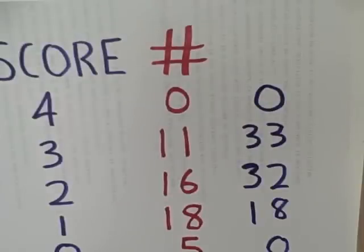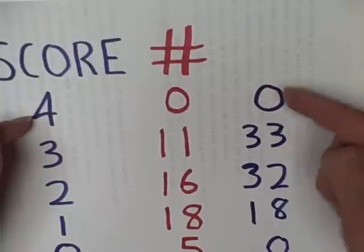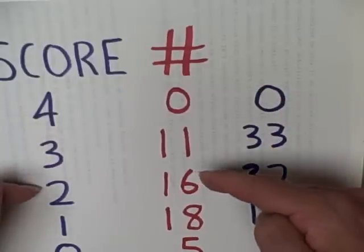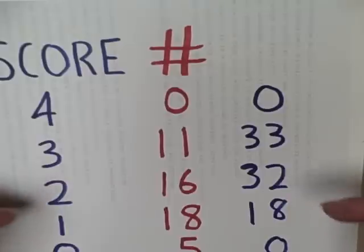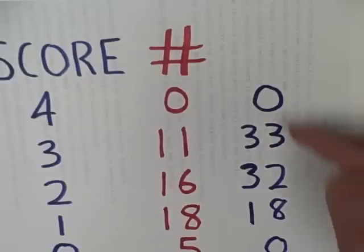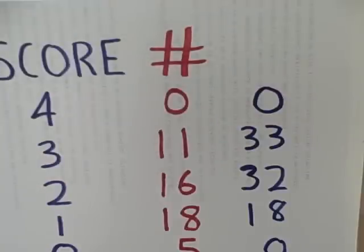Now to get this, we would multiply each score times its frequency. 4 times 0 is 0. 3 times 11 is 33. 2 times 16 is 32. 1 times 18 is 18. And 0 times 5 is 0. We would then add up this column to get the sum of all of our scores. In this case, it happens to be 73.